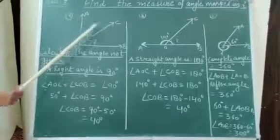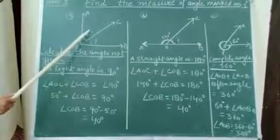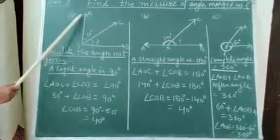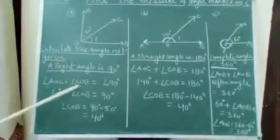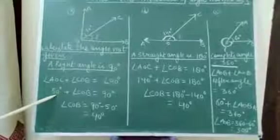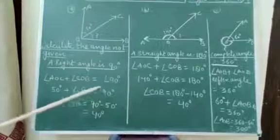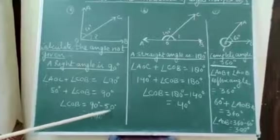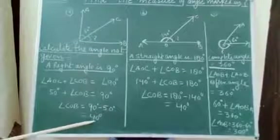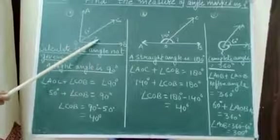Angle AOC and angle COB together make up the right angle. So, angle AOC plus angle COB is equal to 90 degrees. Angle AOC is equal to 50 degrees, plus angle COB equals 90. So, angle COB is equal to 90 minus 50, which equals 40 degrees. So this angle is 40 degrees.